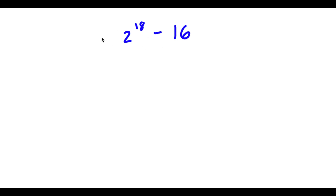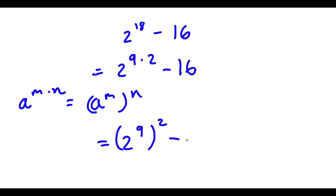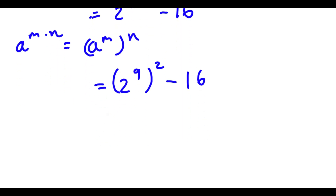Alright, so we have 2 to the power of 18 minus 16. Now 18 is the same thing as 9 times 2. So now I have 2 to the power of 9 times 2 minus 16. And if I have something in the form a to the power of m times n, this is the same thing as a to the power of m to the power of n. So 2 to the power of 9 times 2 equals 2 to the power of 9 to the power of 2. Now 16 is the same thing as 4 squared, so I have 2 to the power of 9 squared minus 4 squared.